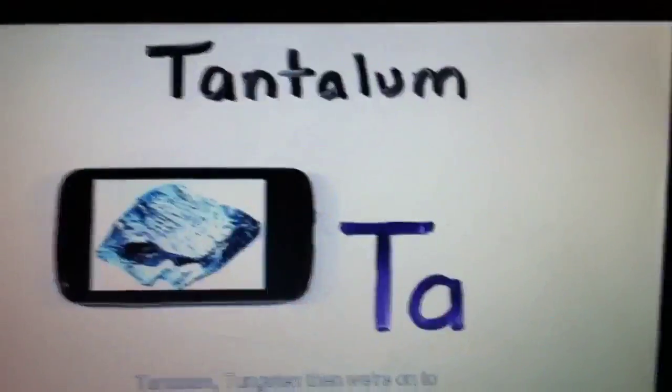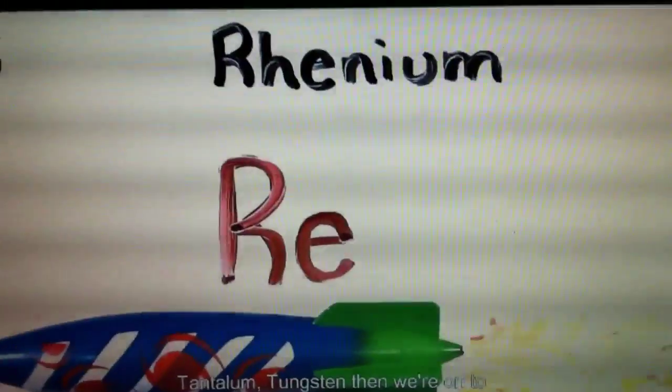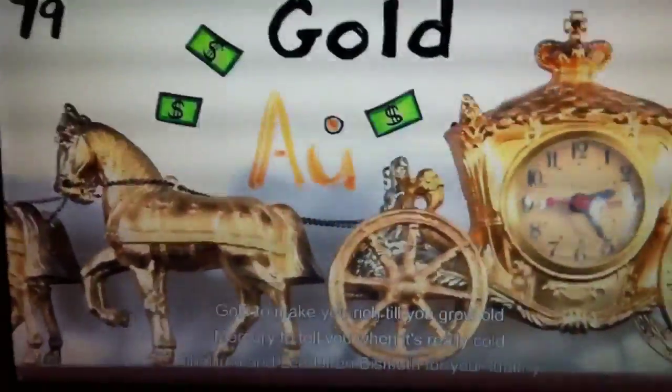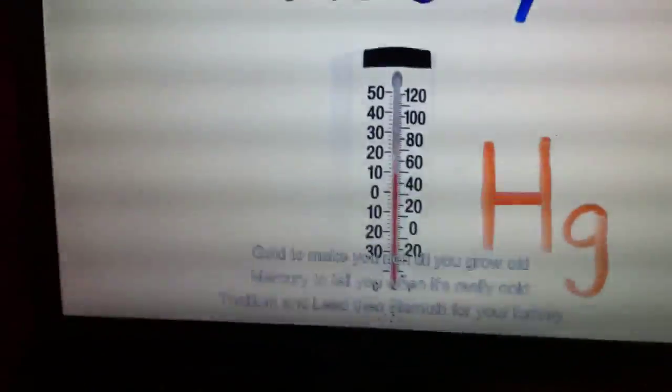Hafnium, tantalum, tungsten, rhenium, and osmium, and iridium, platinum, gold to make you rich till you grow old, mercury to tell you when it's really cold.